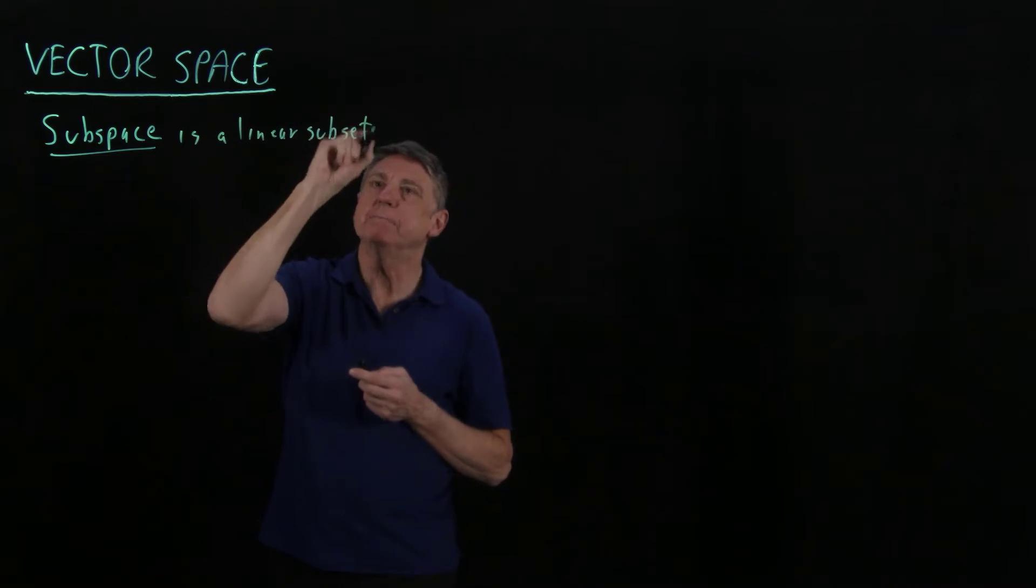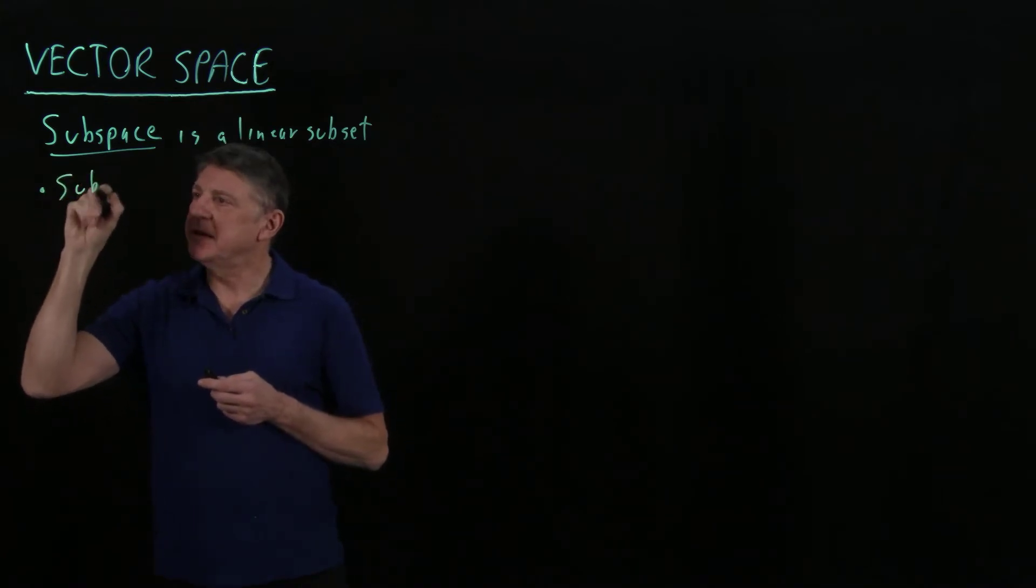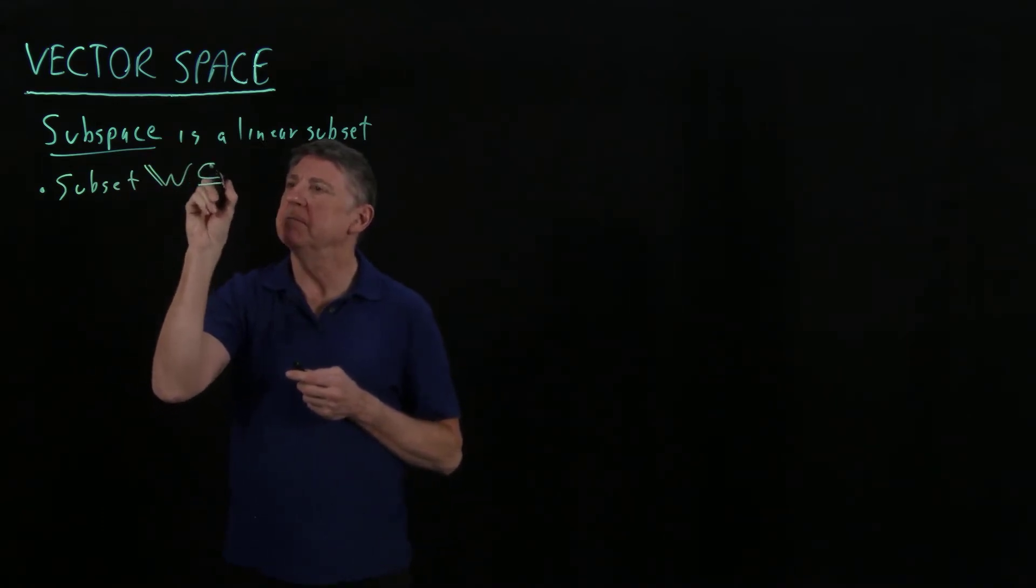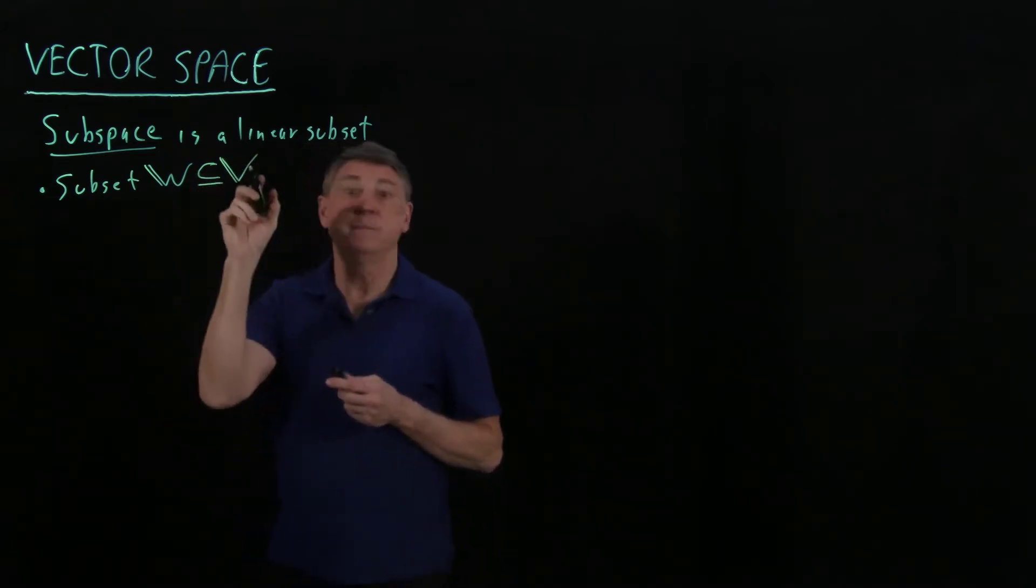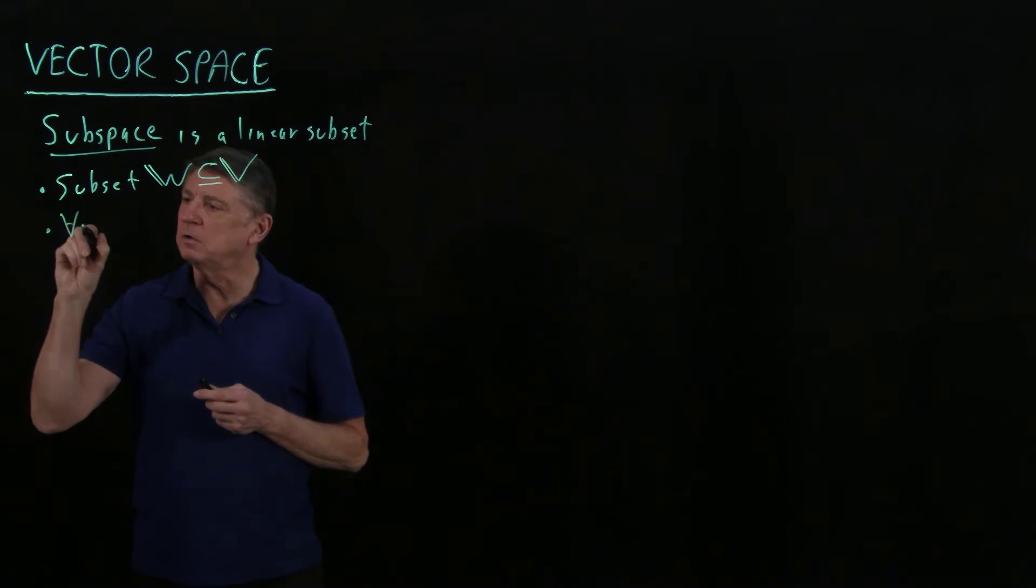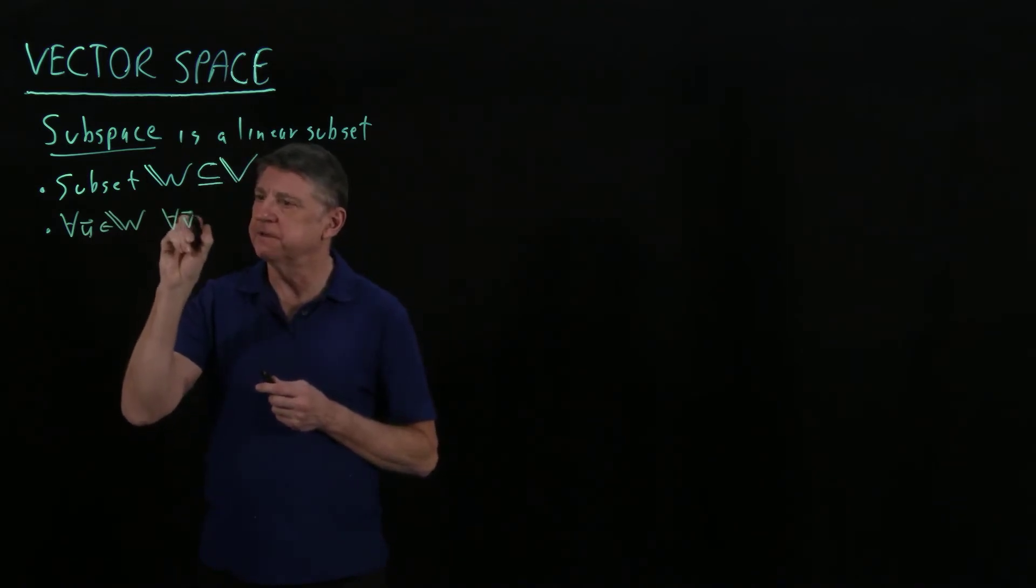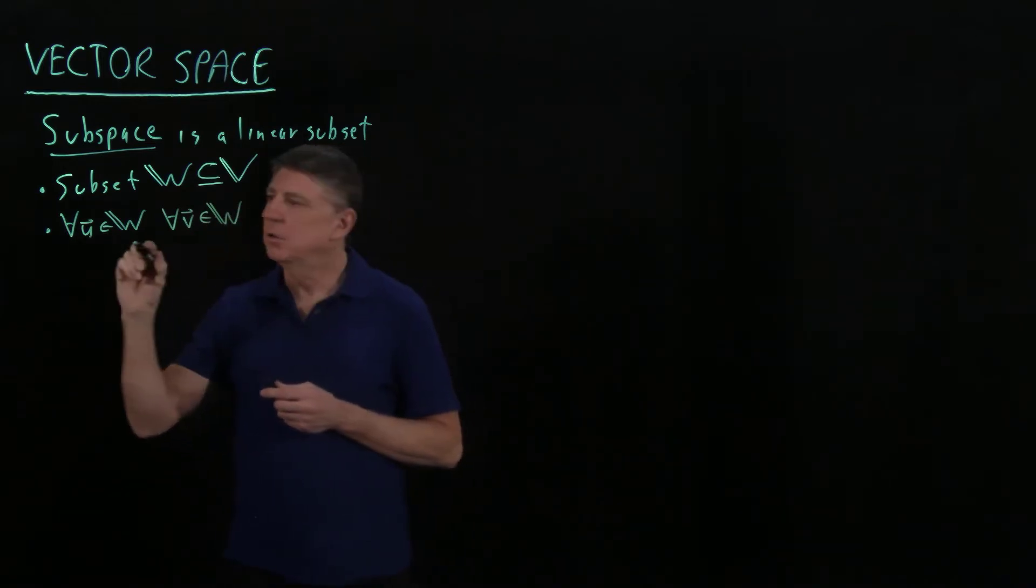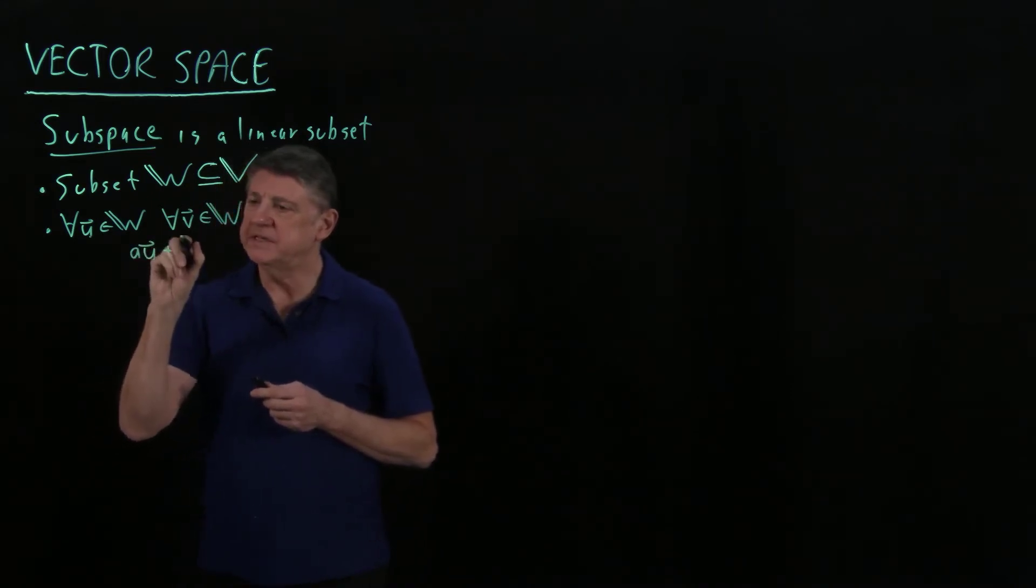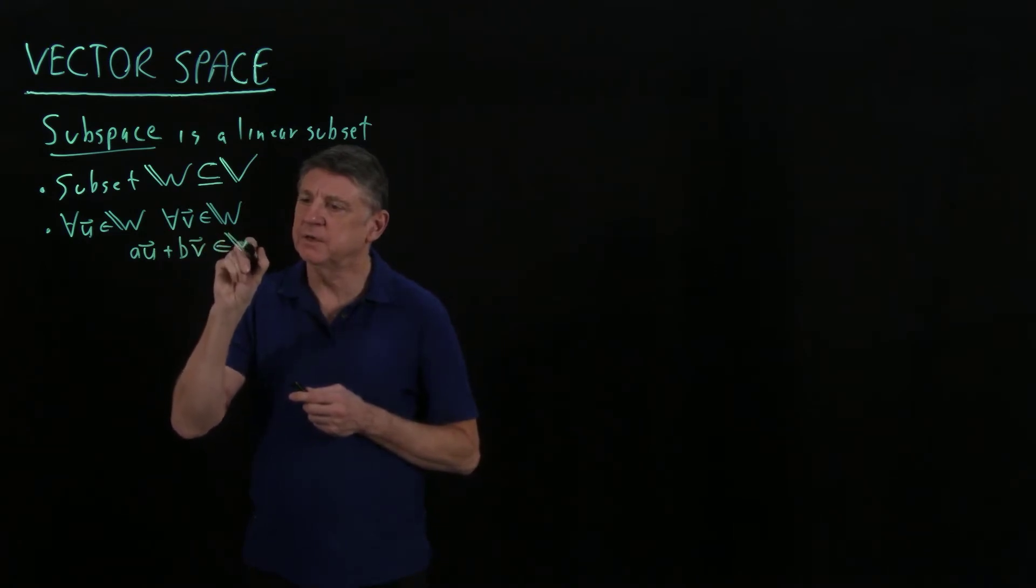And what that means is that first it's a subset, which means suppose we have a double-barreled w, what we mean is that every member of w is also a member of that bigger space we're talking about. And then by linear and closed, we mean that for all u vectors that are in the subspace, and all v vectors that are in that subspace, if we take a real number times the vector u, and we take a possibly different number times the vector v, that that linear combination is also in the subspace.